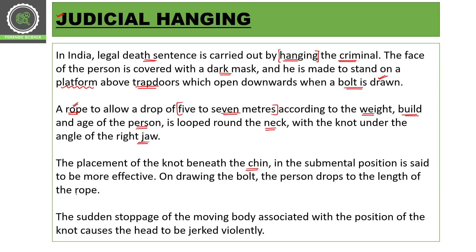On drawing the bolt, the person drops to the length of the rope. As the bolt is drawn, the trap door opens and the person falls downwards approximately five to seven meters. The sudden stoppage of the moving body, in association with the position of the knot, causes the head to be jerked violently.